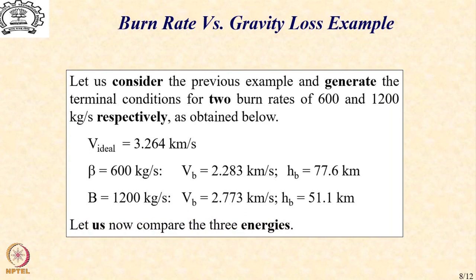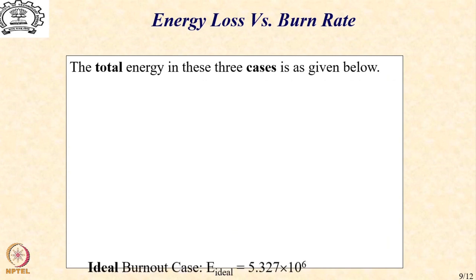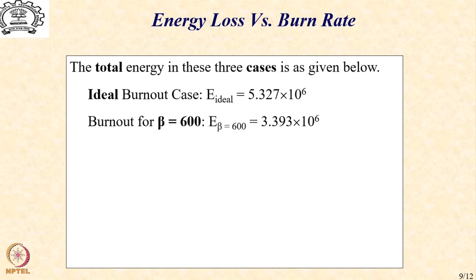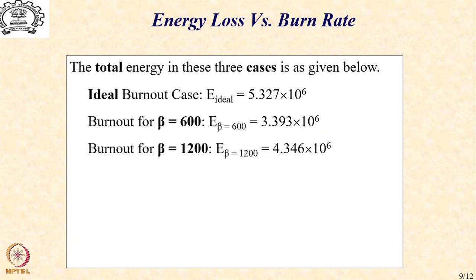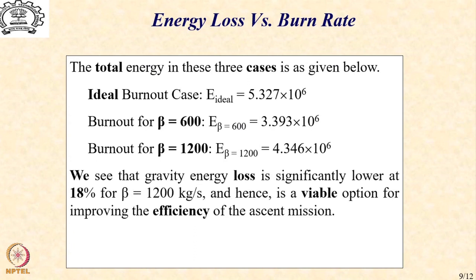Let us now compare the three energies. The total energy in the three cases: ideal burnout is 5.327 × 10⁶; burnout for β = 600 kg/s is 4.346 × 10⁶; and for β = 1200 kg/s the energy is significantly higher, meaning our loss is much lower. In fact, we can calculate this loss to be about 18%, which is half of the previous loss. By increasing the burn rate, we can improve the efficiency of the ascent mission from a gravitational loss point of view.